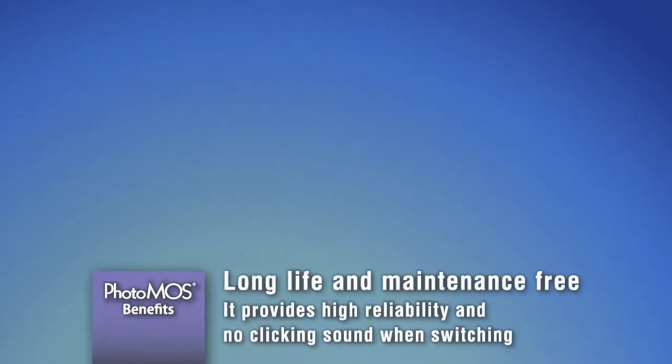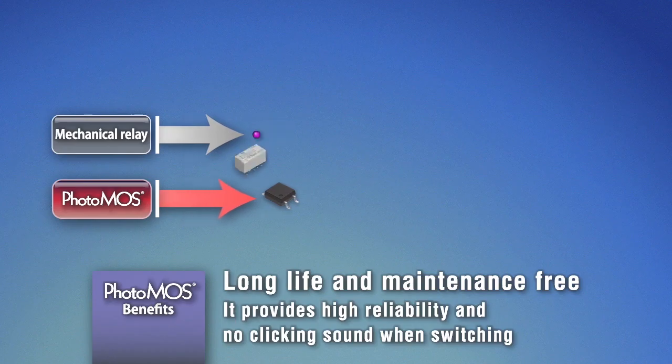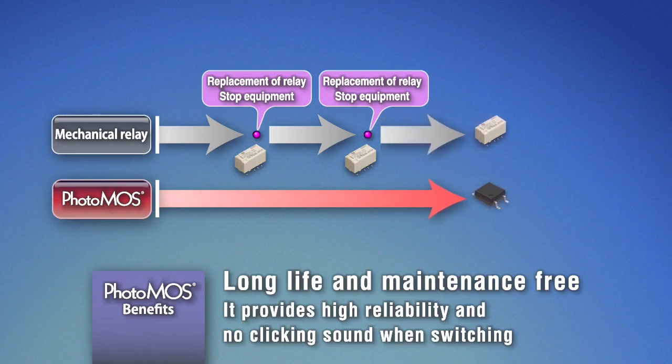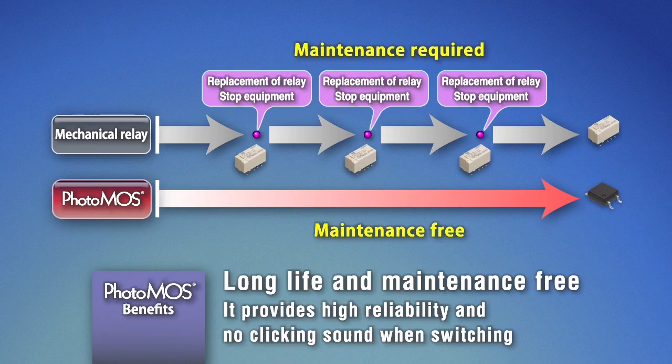Using MOSFET on the output side is a key feature of PhotoMOS. Compared with mechanical relay, it brings big benefits such as maintenance-free and long life. It can reduce the total costs caused by relay replacement, including costs related to stopping the equipment.